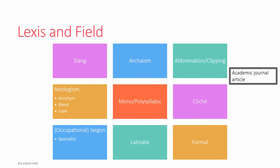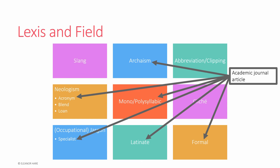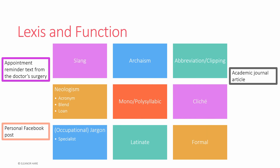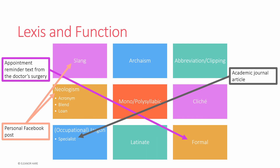For the field, the academic journal article was the only one I analysed in terms of field. We would expect a specialist field and specialist words — for example, archaic and Latinate terms, specialist language, formal language, some acronyms which may or may not be explained depending on the audience, and some polysyllabic words. For function: the reminder text was to remind or inform, so we expect formal language. The academic journal article's function was to inform or persuade, so we expect specialist terms and formal language. Personal Facebook posts are to inform or entertain generally, so again vernacular, slang, and neologisms for entertainment. These are all closely linked with audience considerations.